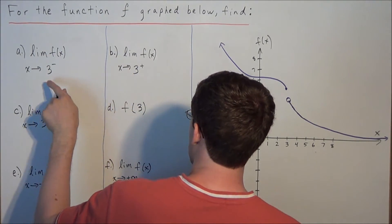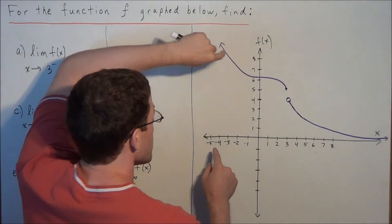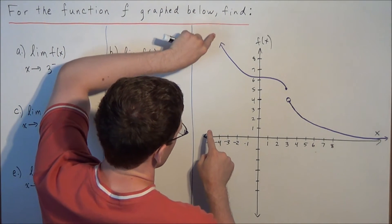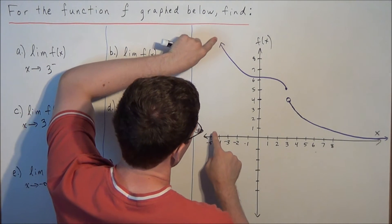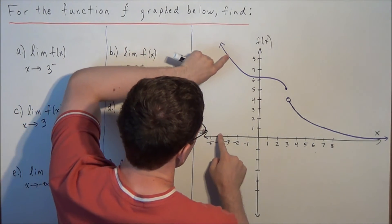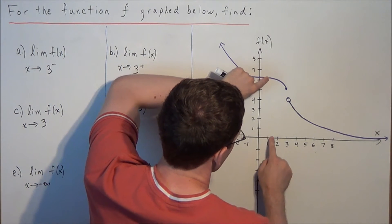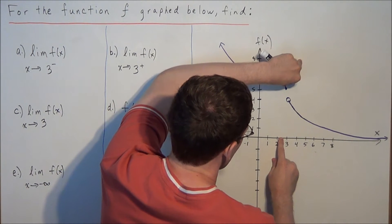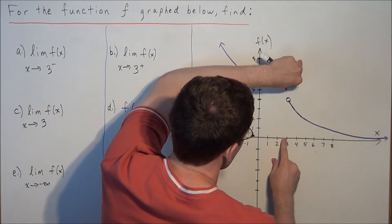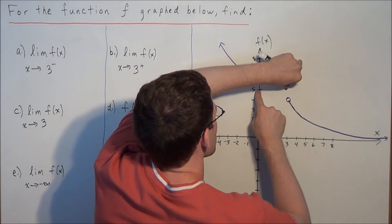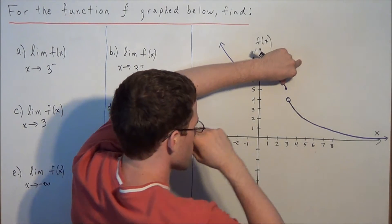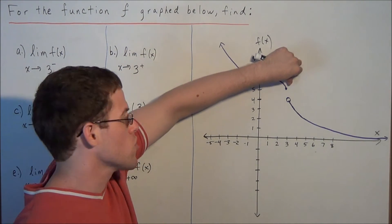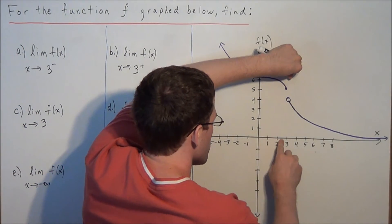What is the limit of this function as we approach 3 from the left? A good strategy is to trace the function with our left hand and follow the x-axis with our right hand, synchronizing the two. As we get closer and closer to 3 from the left, we ask what is the corresponding function value we're getting closer to? The function is getting closer and closer to a value of 5 along the y-axis or f of x-axis. So we're looking for the corresponding y or f of x-coordinate as we approach 3 from the left.